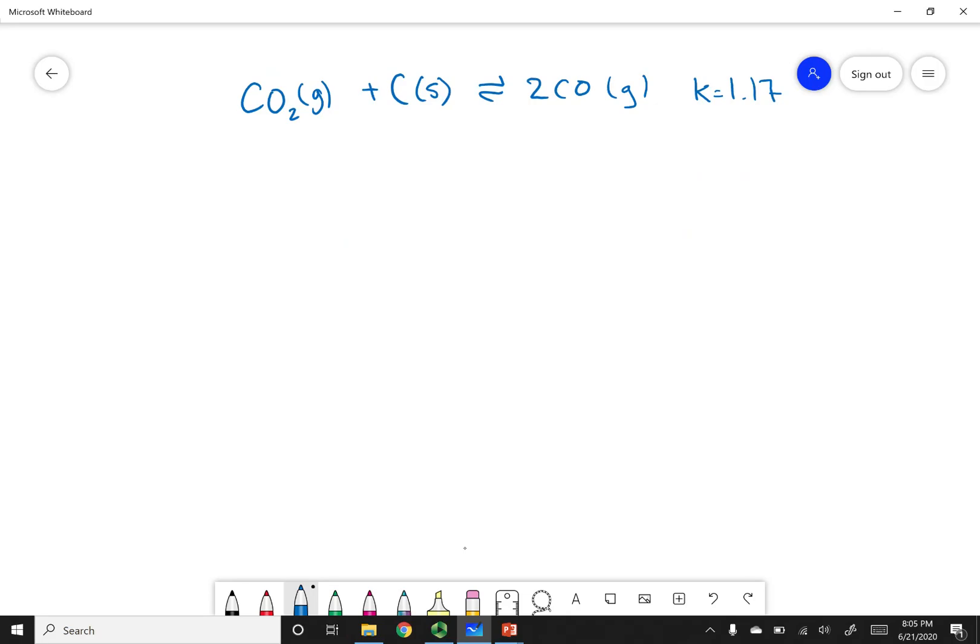All right, ladies and gentlemen, here's our equation. And so, we want to assess where this reaction is. And so, remember, whenever we do an assessment, we're going to use Q. So, my QC, in this case, is going to be my products, CO squared, divided by my reactants. And this is going to be CO2, and we're not going to count my carbon, because it's in its solid state.